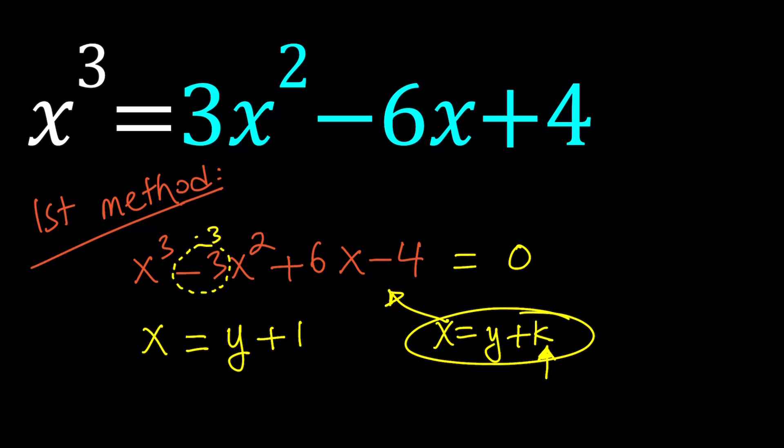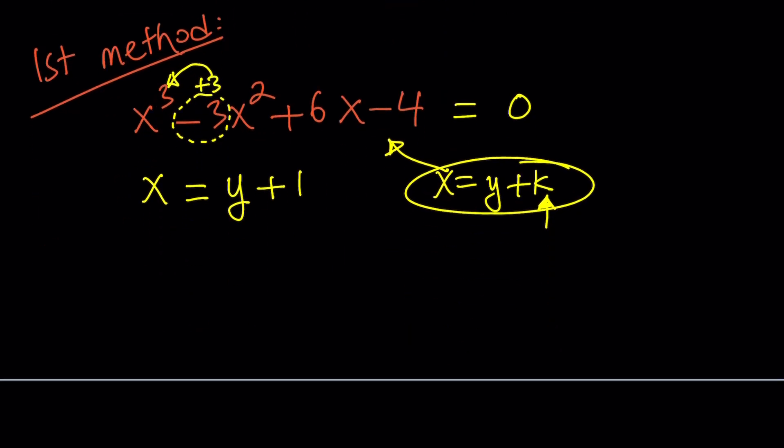And then you divide it by the highest power, which is the degree. So in this case, you're going to get 3 divided by 3, which is 1, and then you just add it to another variable, and that becomes your x. Make sense? So let's see how this works in practice. Let's replace x with y plus 1.